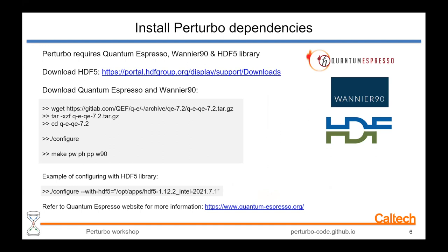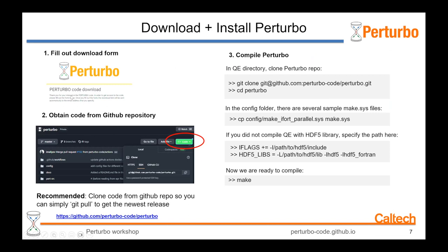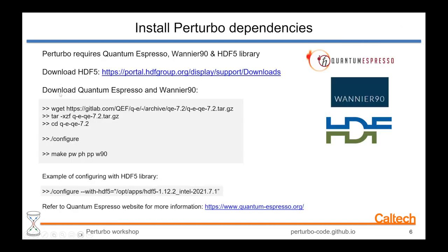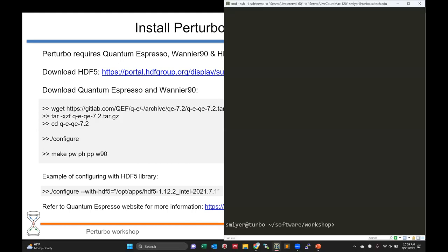Next I'm going to discuss how to install Perturbo. The first step is to install Perturbo's dependencies: Quantum Espresso, Wannier90 (which we install within Quantum Espresso), and HDF5. You may already have the HDF5 library installed on whatever supercomputer you're using. If you don't, there are straightforward instructions on the website. I'm going to open a terminal and show you the commands — since it takes some time to compile Quantum Espresso, I'll show the commands but not actually compile it.